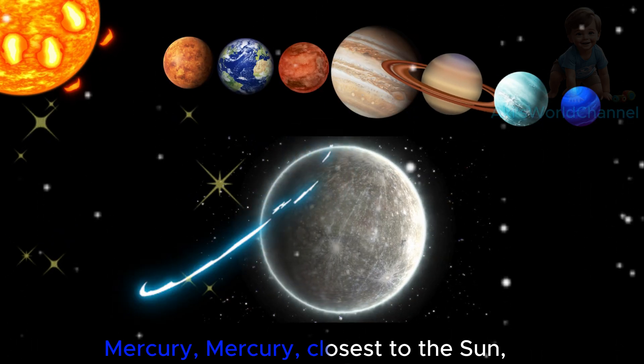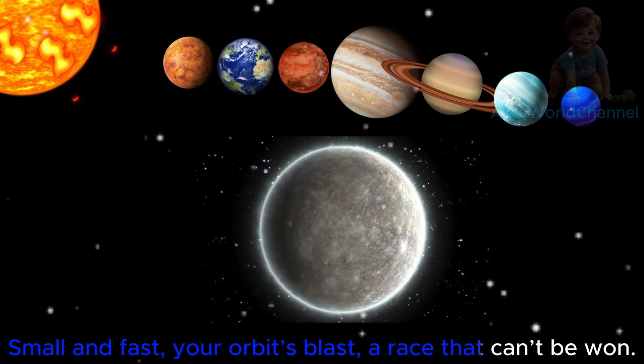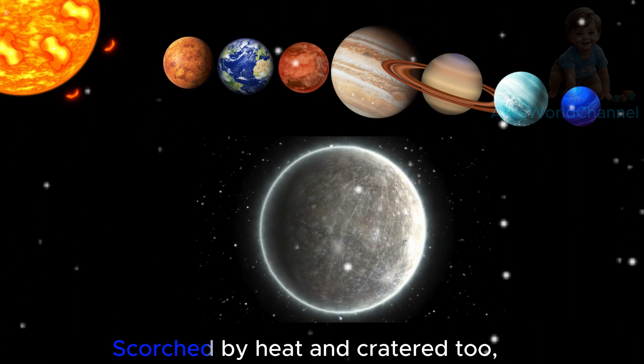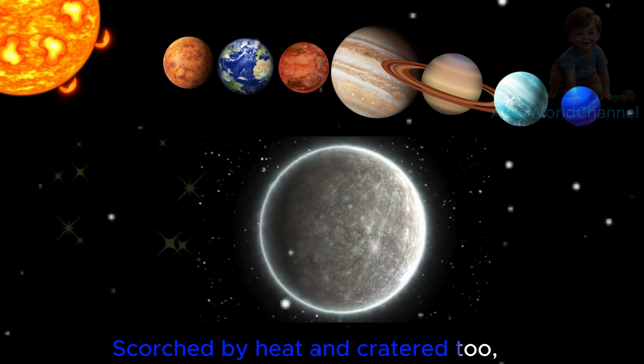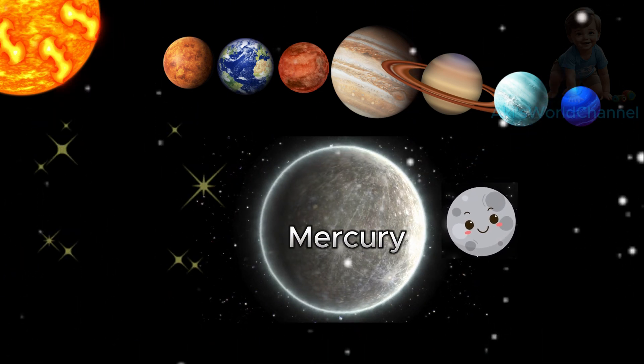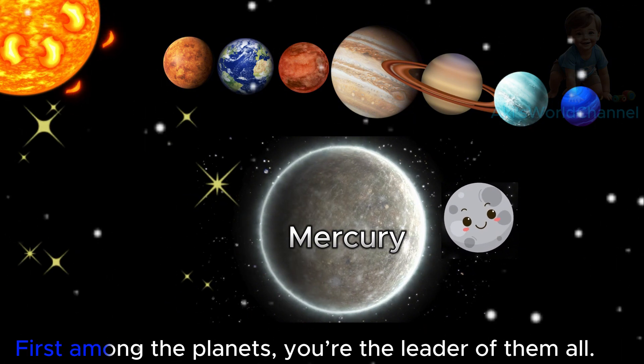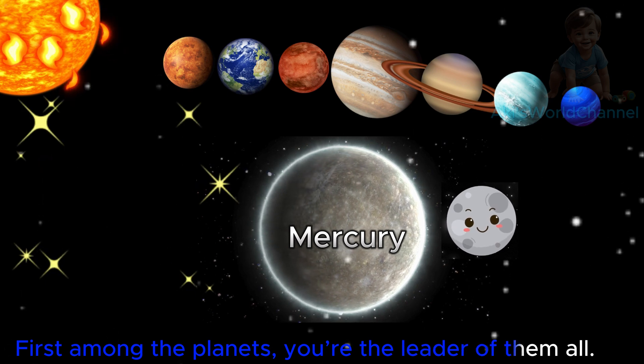Mercury, closest to the Sun. Small and fast, your orbits blast a race that can't be won. Scorched by heat and cratered too. Day and night, extremes come through. Mercury, so unique, so small. First among the planets, you're the leader of them all.